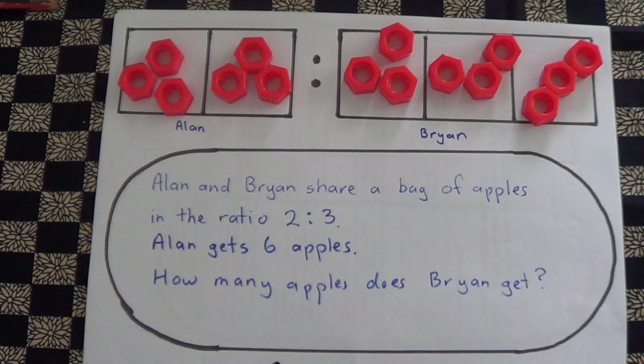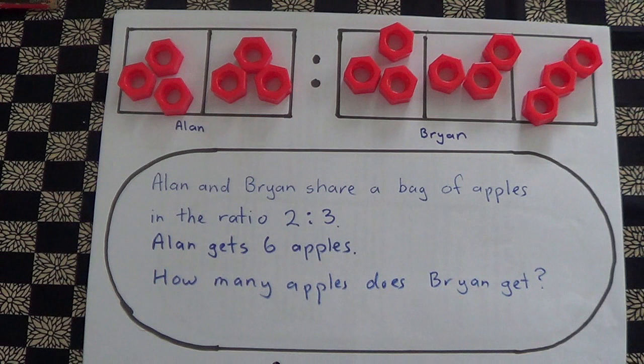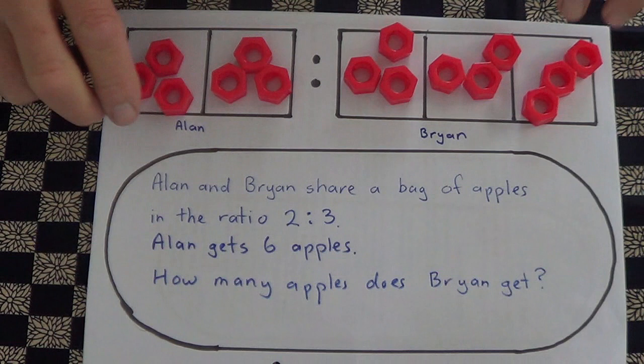So Alan's got 1, 2, 3, 4, 5, 6, and Brian's got 1, 2, 3, 4, 5, 6, 7, 8, 9. That's the ratio of sharing: 6:9.